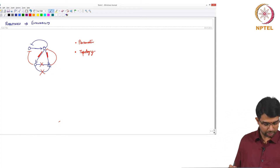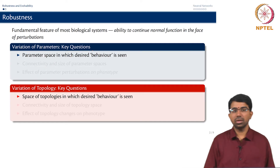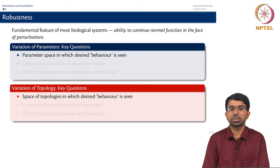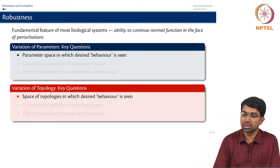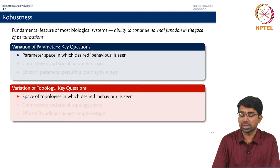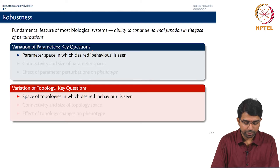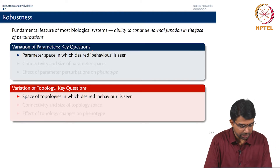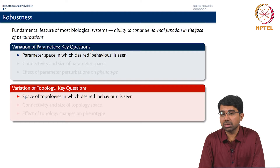So how do we look at this? You can ask very similar questions in both cases. First: what is the parameter space in which a desired behaviour is seen — like the system is viable, the system produces a behaviour very similar to the measured data — or what is the space of topologies in which the desired behaviour is seen?